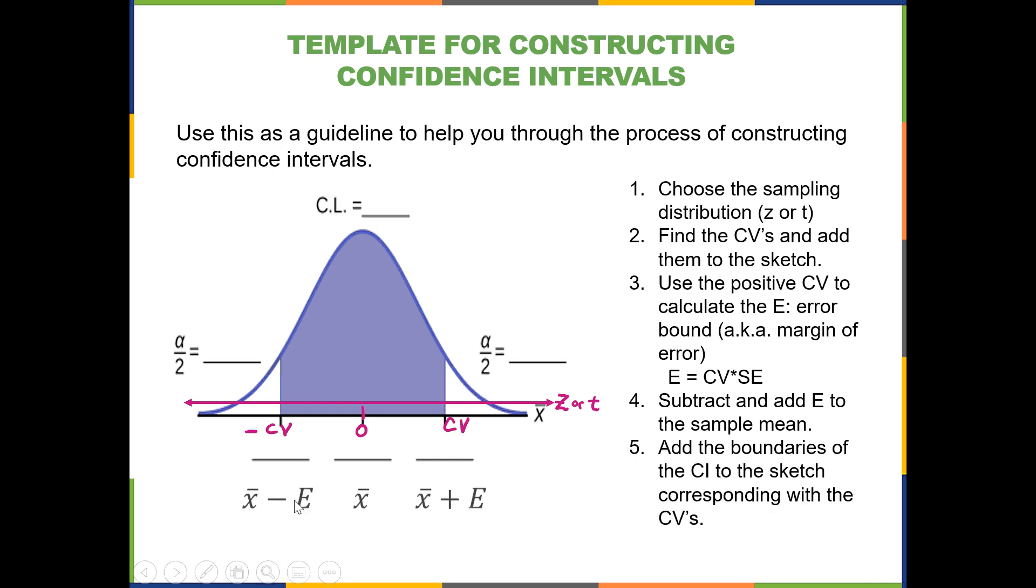Take your margin of error that you just calculated and subtract and add it to the sample mean. And you can add those boundaries. So you can see the correspondence between your critical value and your interval boundary.